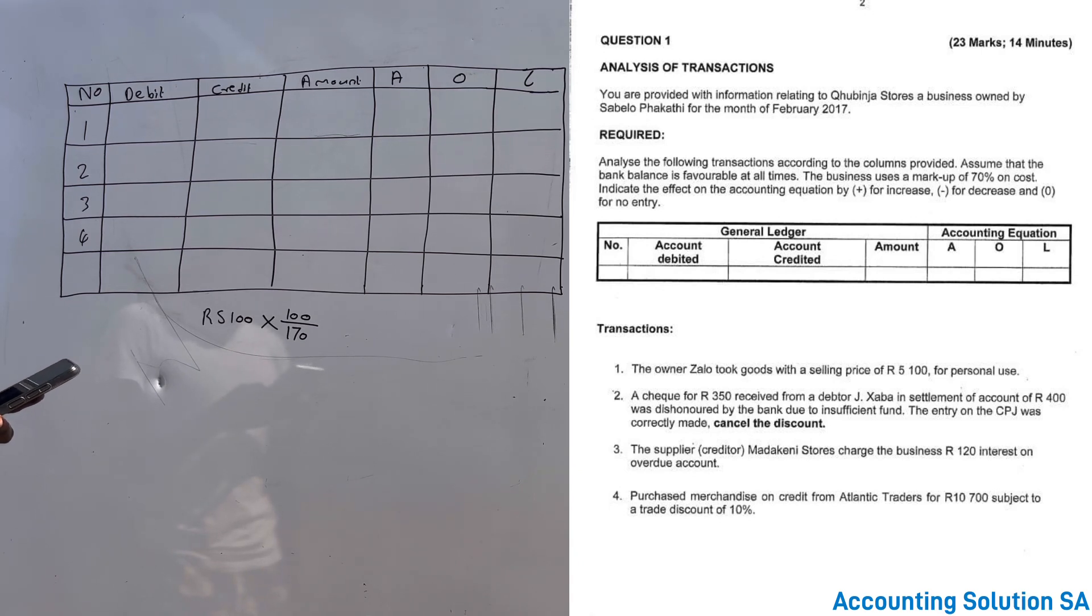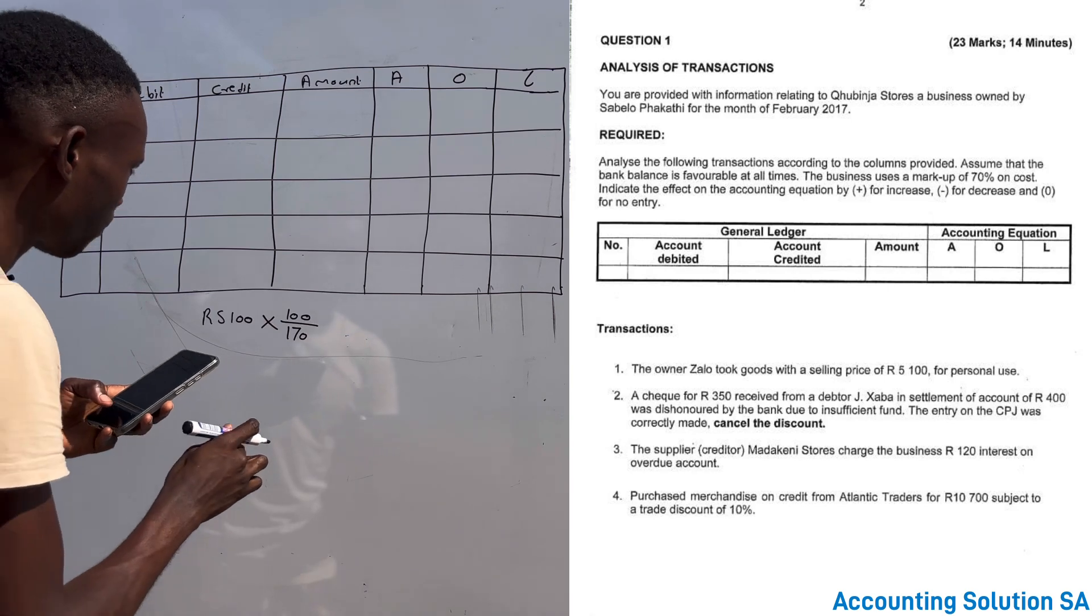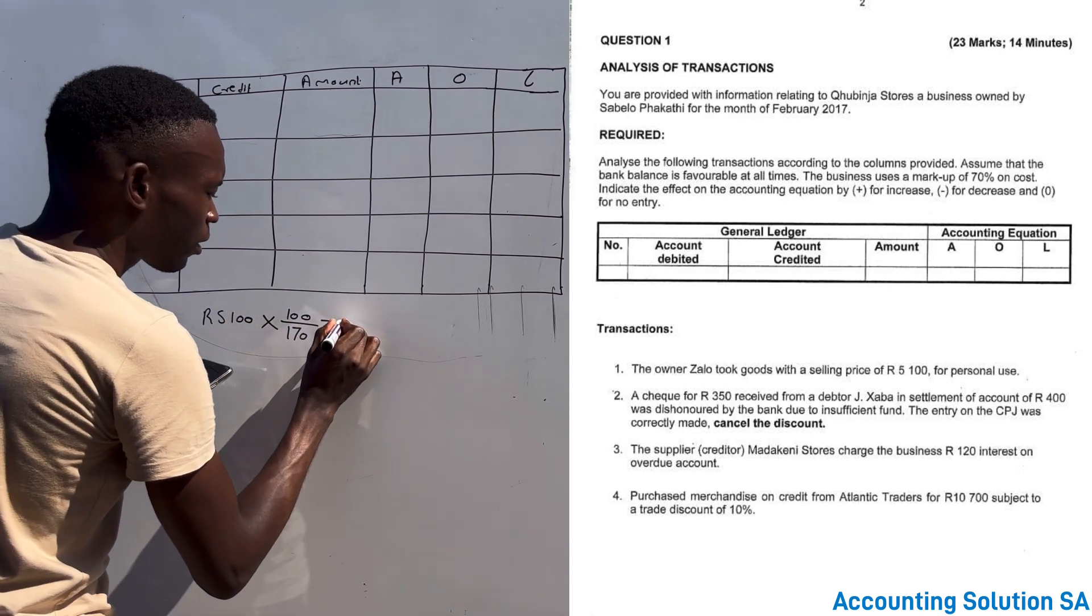5,100 times 100 over 170, then it's going to give us an amount of 3,000. It's going to give us an amount of 3,000.